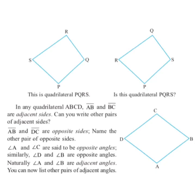Side AB and side DC are opposite sides — opposite means facing each other. One pair of opposite sides is side AB and side CD. The other pair of opposite sides is side AD and side BC.